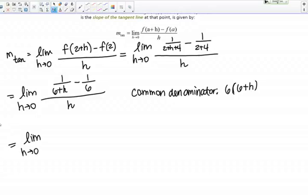To do that, the first fraction, 1 over 6 plus h, needs the factor of 6. So I'm going to rewrite it as 6 over 6 times 6 plus h. Notice that if I canceled out that 6, I'd return to my original form.